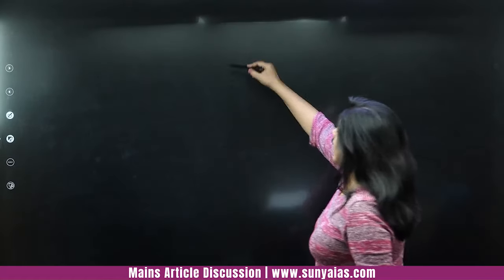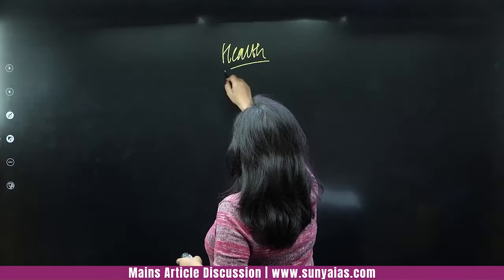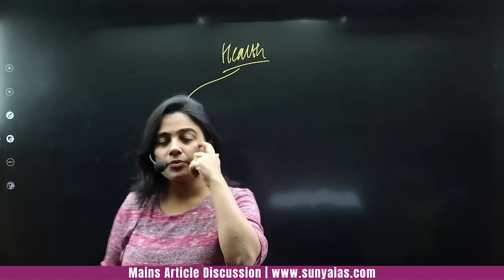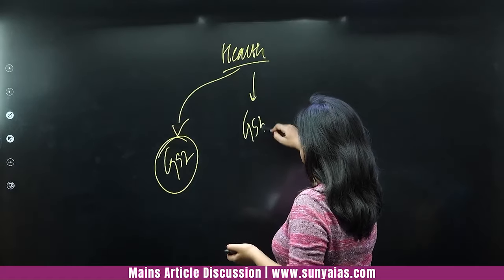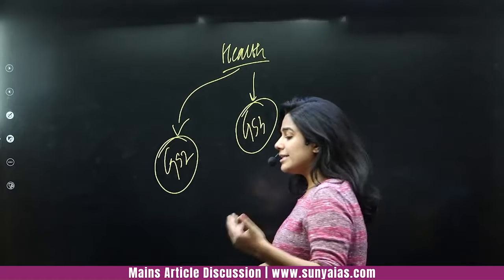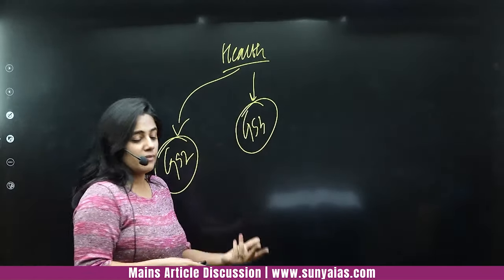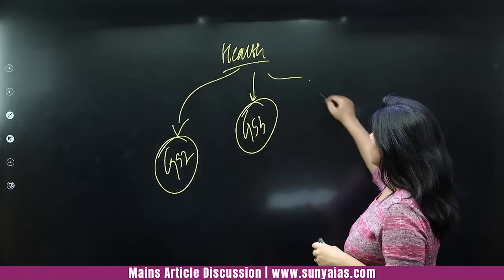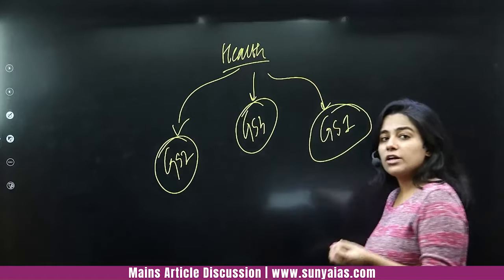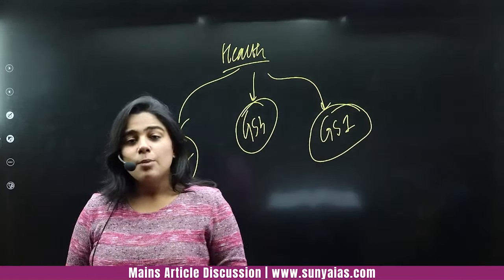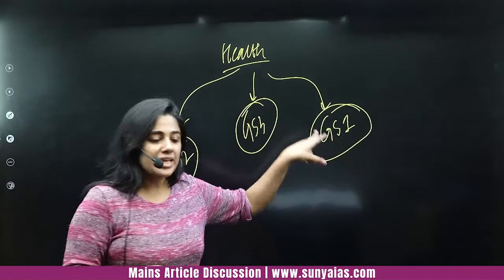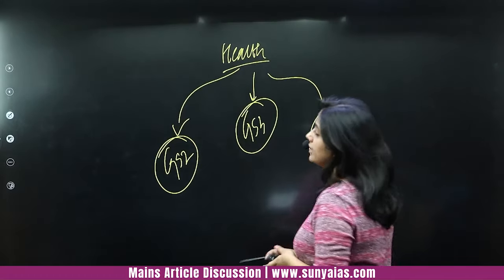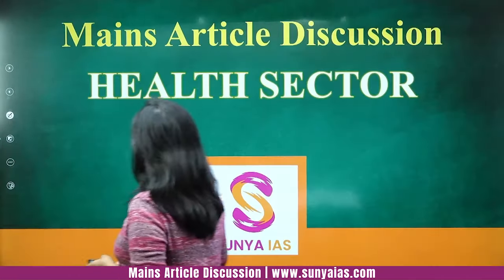With this, let's start. The health aspect is primarily important from the GS2 perspective because health and education is a header in GS2. But even in GS3, it is important as it helps to increase demographic dividend and economic development. In GS1 as well, you can use health-related data pointers, because the denial of health is a problematic reality of our society.